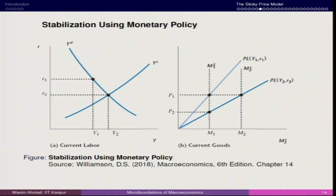If you understand the stabilization scheme of the Keynesians, the central bank will immediately reduce the rate of interest. Reducing the rate of interest means increasing the money supply. Once you have the nominal interest rate getting lower, you increase the money supply. Since we have the price level fixed, this is a rightward shift in the money demand scenario — here we have P·L(Y2, R2) and the money supply is M2.